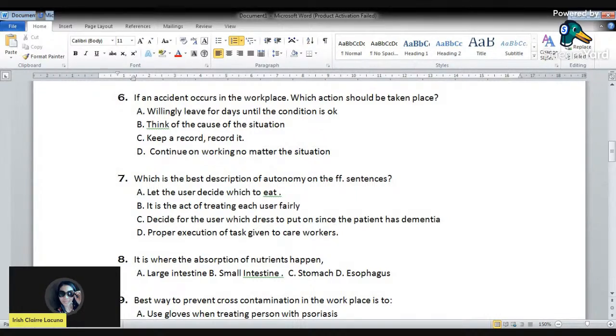Okay, so we have number six: if an accident occurs in the workplace, which action should be taken? A: willingly leave for days until the condition is okay. Letter B: think of the cause of the situation. Letter C: keep a record, record it. Letter D: continue on working no matter the situation. What do you think? All right, the correct answer for number six is letter C: keep a record, record it. Yes, every time, as what I've heard or learned from my friends working as a care worker in Japan, most of the time we will have the kiroku, meaning record.